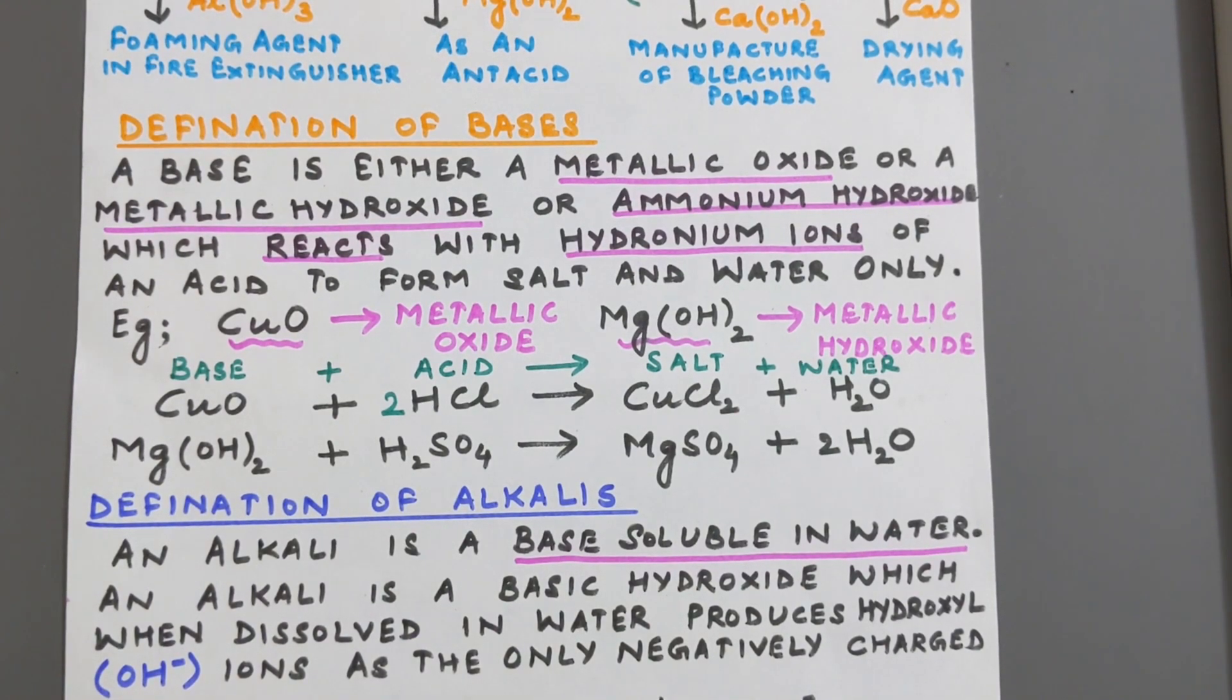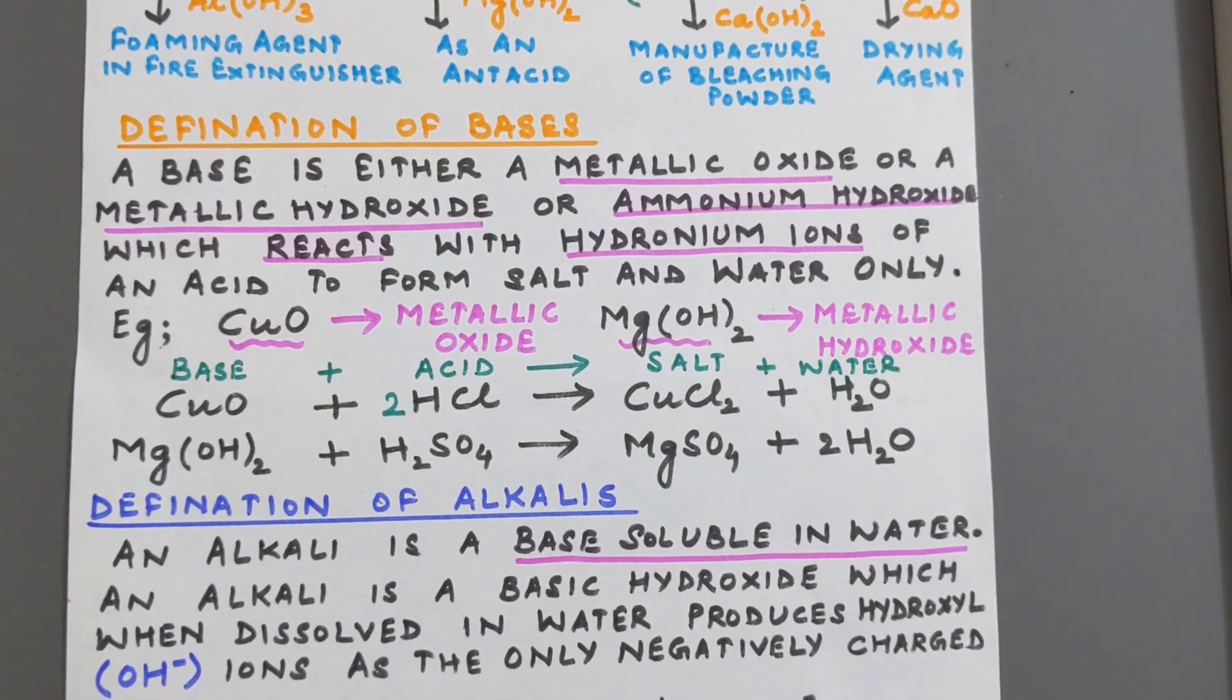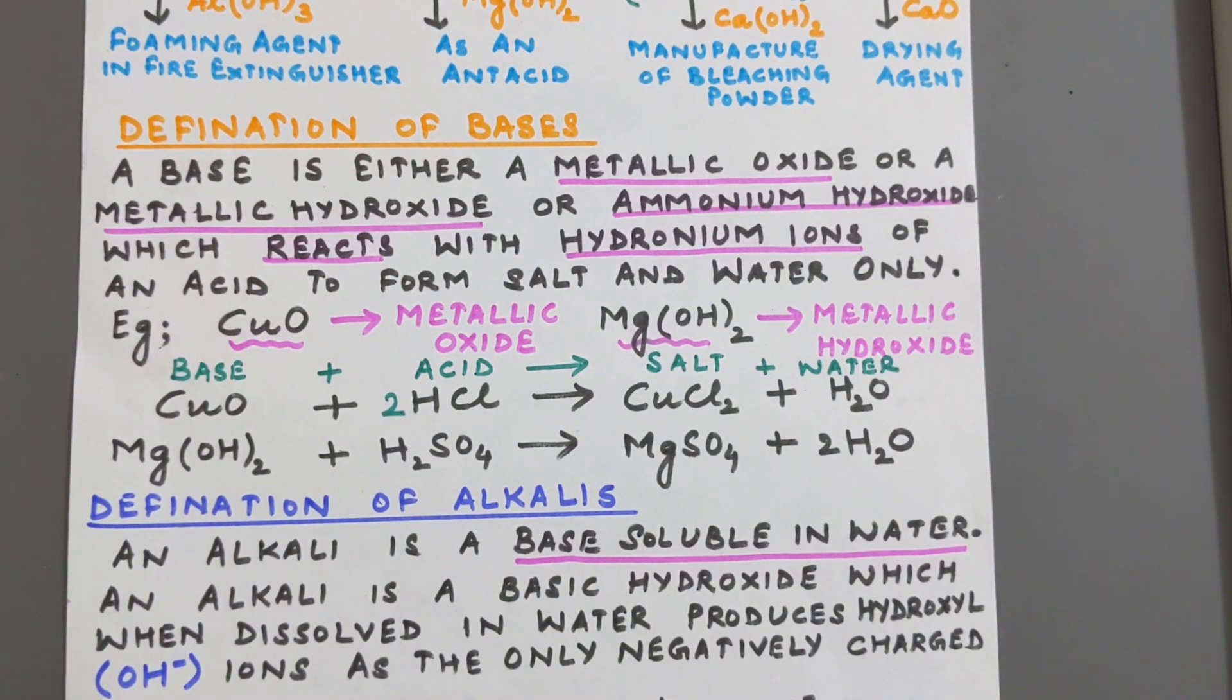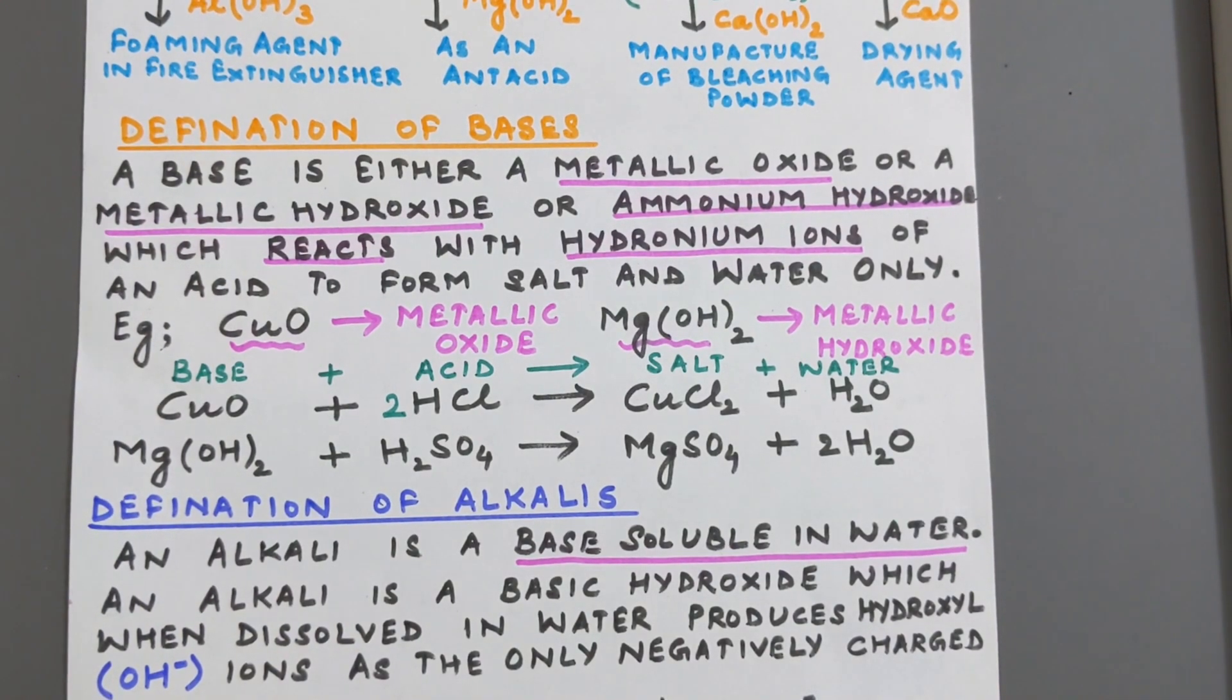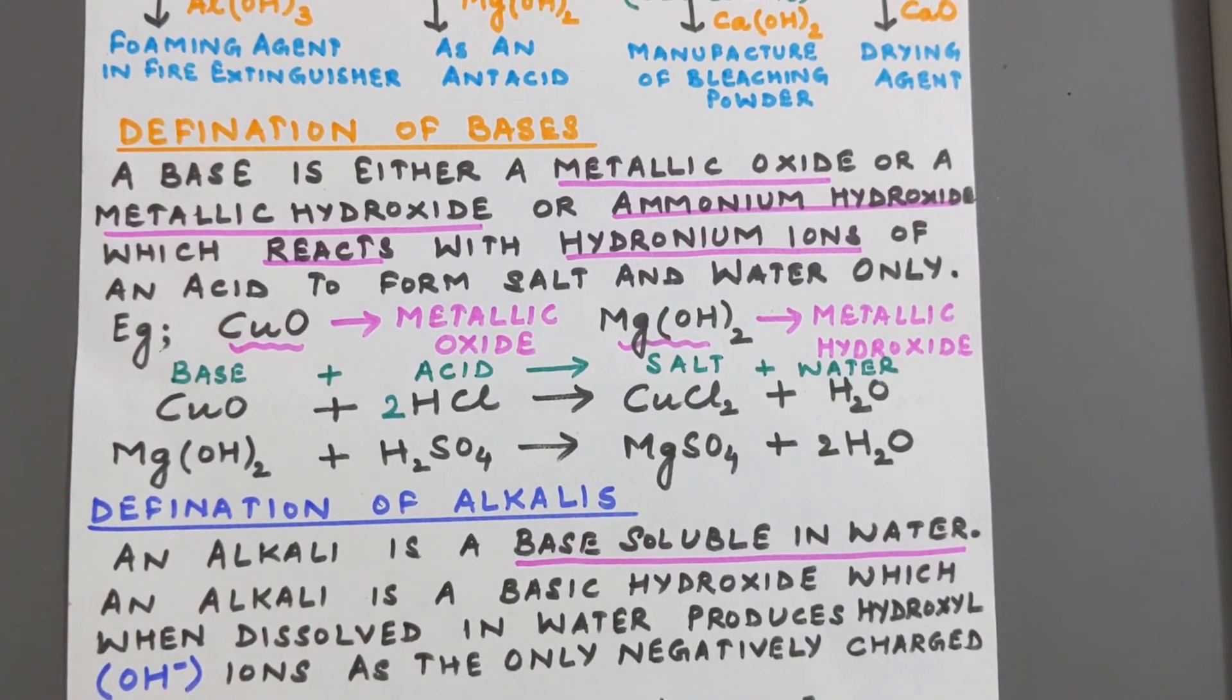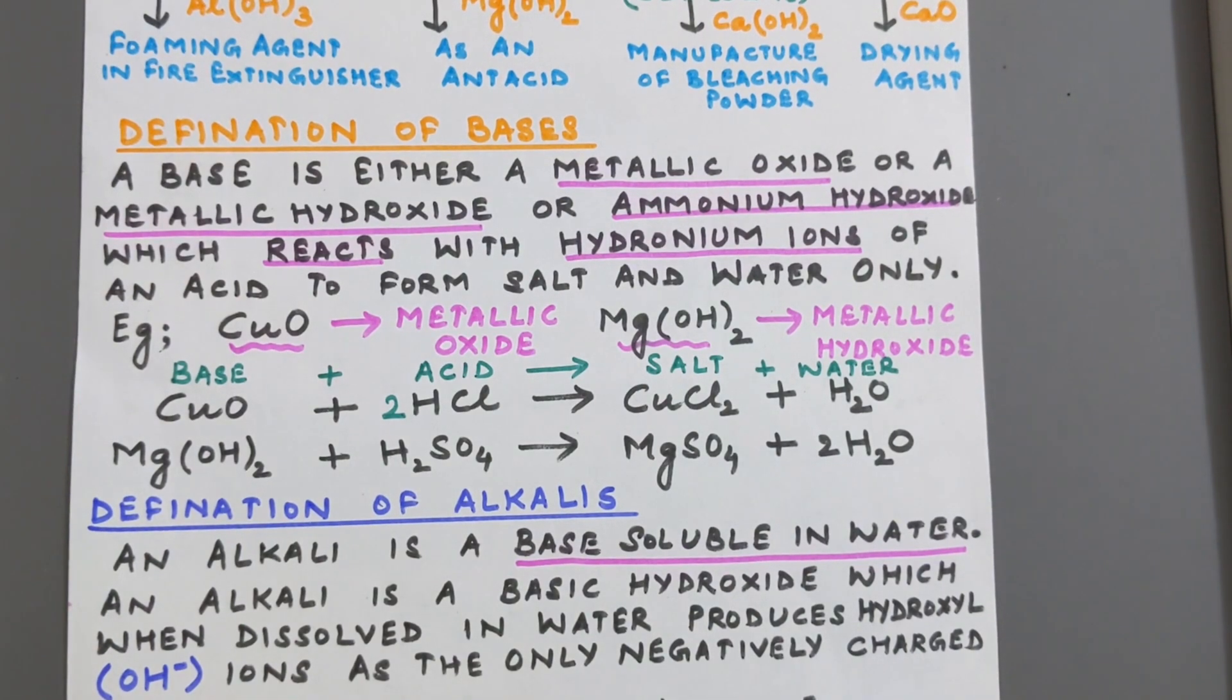So if a base which is actually an oxide of a metal or a hydroxide of a metal, whenever it reacts with acid, that means it is actually reacting with the hydronium ions of the acid, it will produce salt and water only.